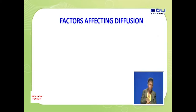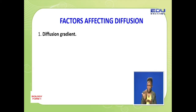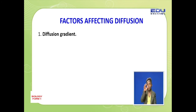So which are the factors that affect the rate of diffusion? We start with the factors affecting the rate of diffusion. Our first factor is diffusion gradient — that is one factor that affects the rate of diffusion.